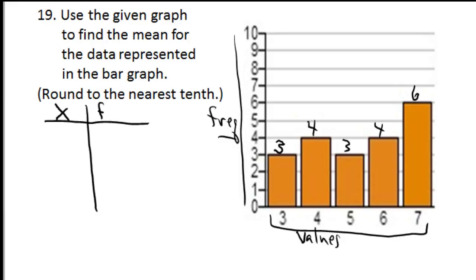You've got your x values and their frequencies. The first x value is 3 with a frequency of 3. The second x value is 4 with a frequency of 4.